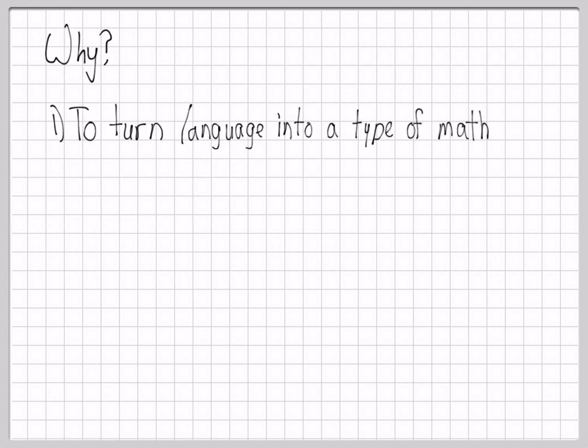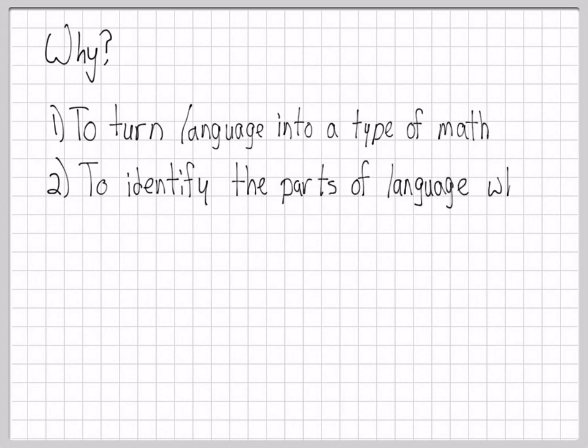The reason why we bother with this sort of logic is, amongst other things, to turn language into a type of math. Also, it allows us to identify the parts of language which determine what is true or false. The point is to come up with a math about determining true or false arguments.